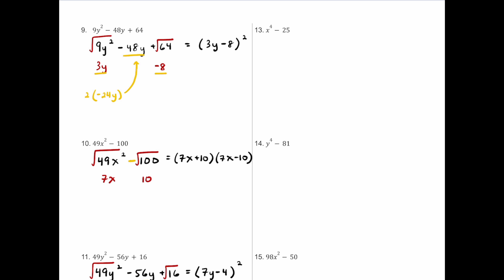For number thirteen, the exponent is higher — we have x to the fourth power minus 25. Remember that anything raised to an even exponent is a perfect square, so there is a difference of squares here. The square root of x to the fourth is x squared, and the square root of 25 is 5. So the factored form has two binomials: (x squared plus 5) and (x squared minus 5).